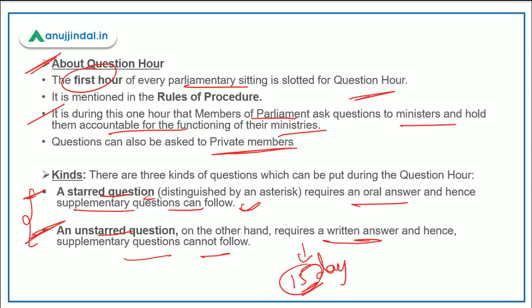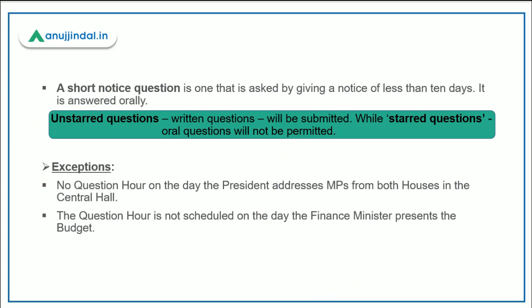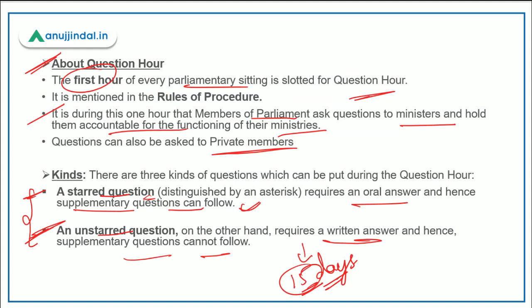After 15 days, the respective minister or private member submits the written answer on the table of parliament. A short notice question can be asked by giving a notice of less than 10 days and is answered orally. So these are the types of questions that can be asked in Question Hour — remember it is the first hour of every parliamentary sitting, during which any MP can ask questions to ministers or private members.